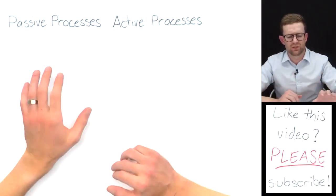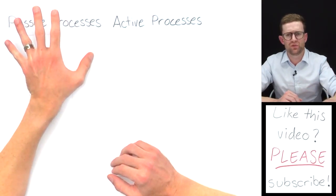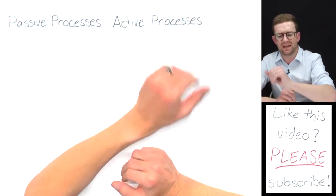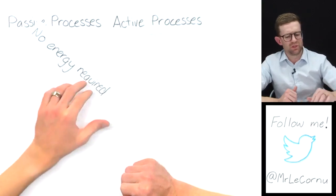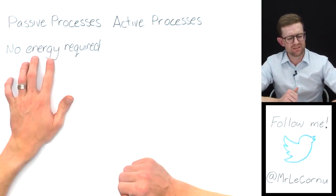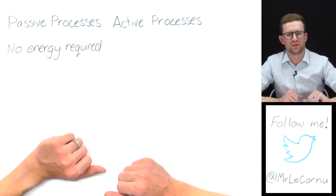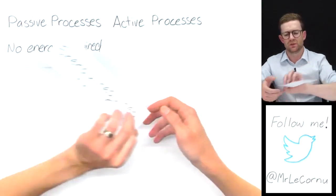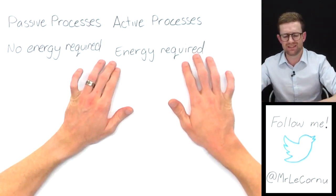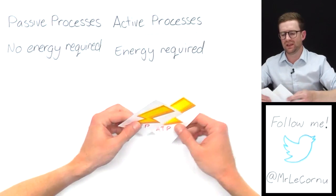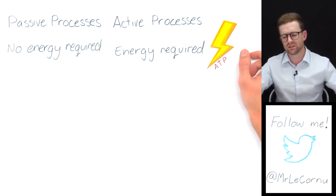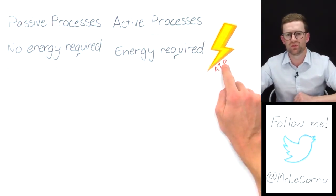Let's take a look at the two: passive processes for moving things in and out of cells and active processes. Simple definition. Passive means there's no energy required for those processes to occur. Active processes means there is energy, and the energy is usually in the form of ATP.